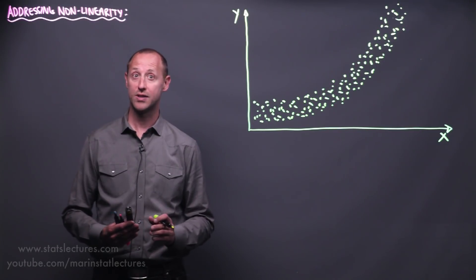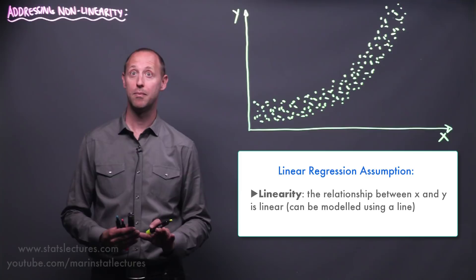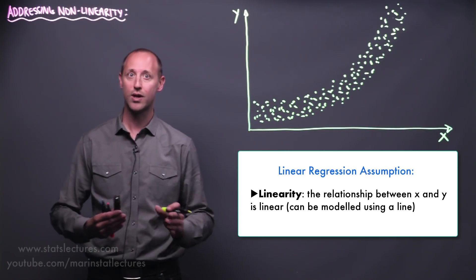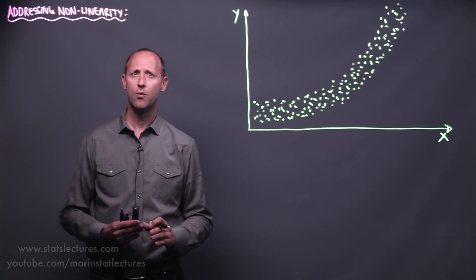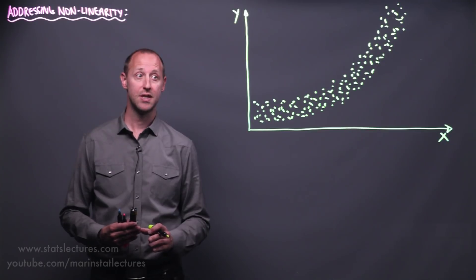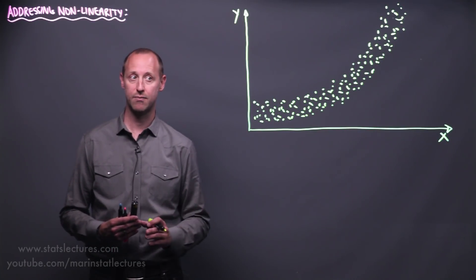Linear regression requires some assumptions to be met in order to use it, and the most important assumption being linearity, ensuring that the relationship between x and y is linear or can be represented using a line. We have separate videos to explore checking the assumptions, how we can do that, what the assumptions are, and how we can check them visually.